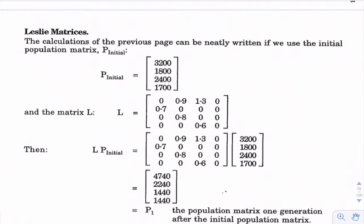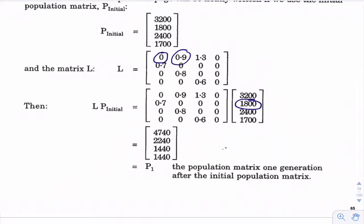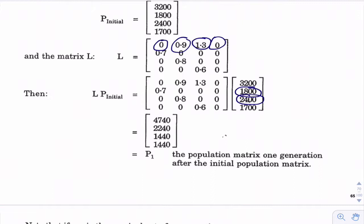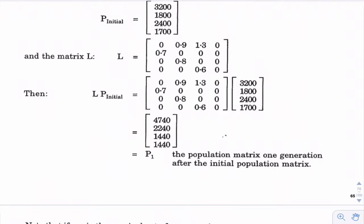So we have 0 of the juveniles reproducing, 0.9 times 1,800 for the young adults reproducing at a rate of 0.9, 1.3 times 2,400 for the mature adults reproducing, and then 0 — none of the 1,700 aged are reproducing. That is how we get 4,740 for our first value, the number of juveniles. So the first row of the Leslie matrix contains our reproduction rates.